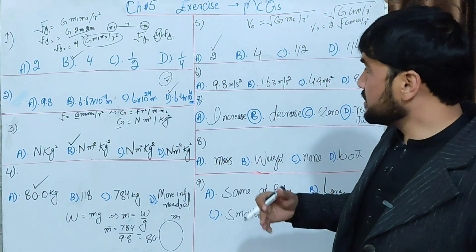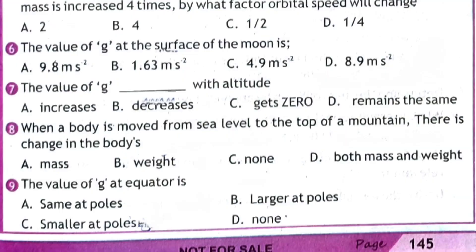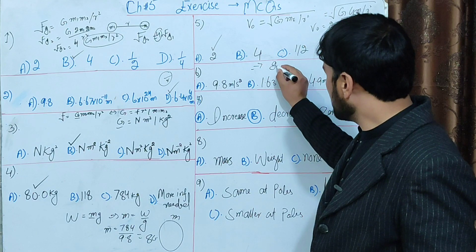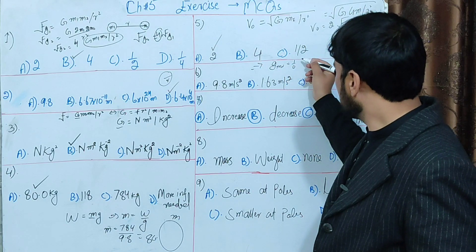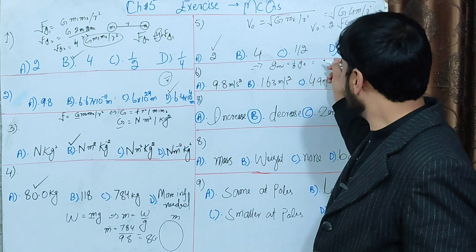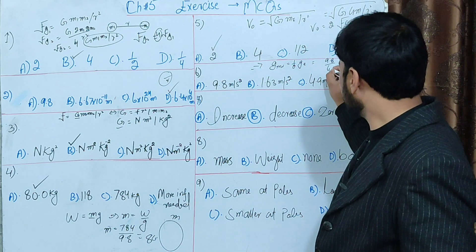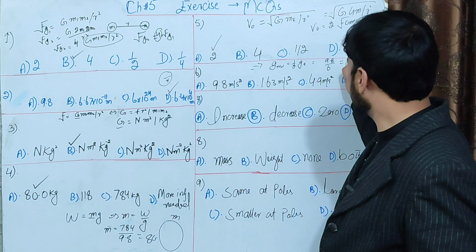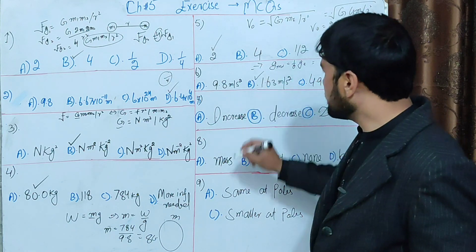The answer is 2 times — option B is correct. MCQ 6: The value of g at the surface of the Moon. The gravitational acceleration of the Moon is 1/6 of Earth's gravity. Earth's g is 9.8 m/s², so Moon's g = 9.8 / 6 ≈ 1.63 m/s². Option B is correct.